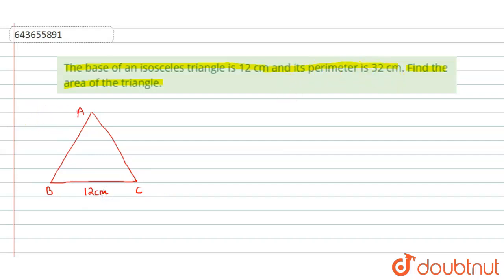So first of all we will find the other two equal sides of this triangle. We know that perimeter equals to sum of all the three sides. We can take the equal sides as X, so X plus X plus 12 will be the perimeter, which is given to us as 32. So 32 equals to 2X plus 12, and from this we get 2X equals to 20, which gives us X equals to 10.